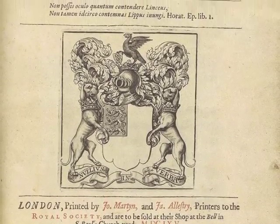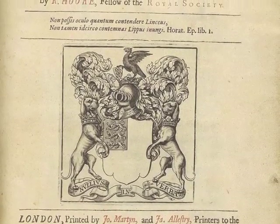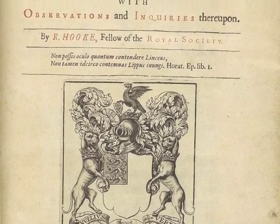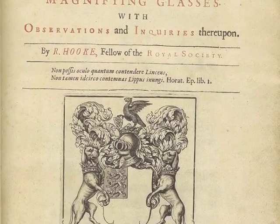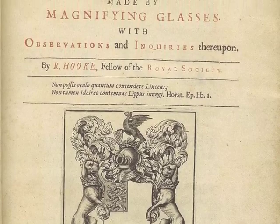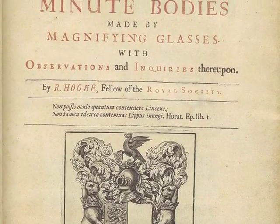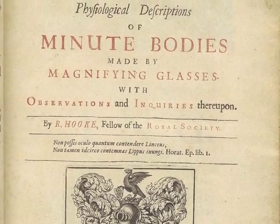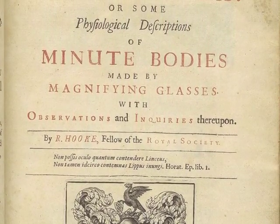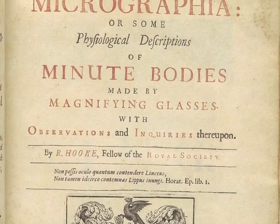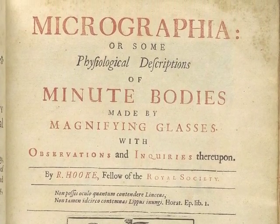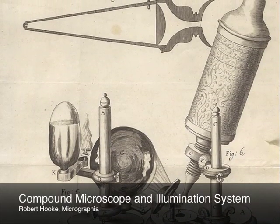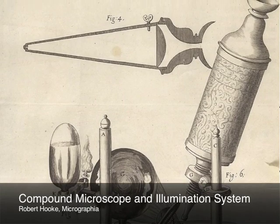Other things Hooke was involved with included the newly formed Royal Society of London, of which he was the curator for experiments. His duty was to come weekly with a new experiment he designed. Micrographia was the result of Hooke creating his compound microscope and illumination system with a pencil and paper at his side. He used both of these inventions to see the details of the smaller world around us.